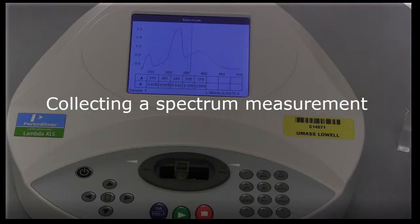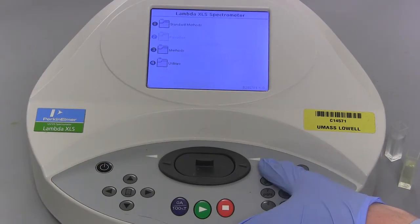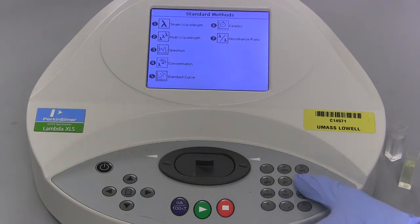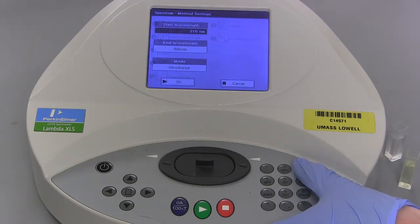This portion of the video will show how to collect a spectrum from your sample. To calibrate, press 1 on the spectrometer screen for the Standard Methods folder. In the Standard Methods folder, press 3 to open the Spectrum Methods settings.